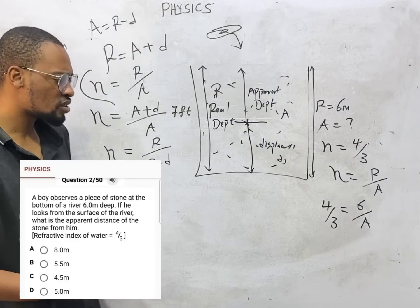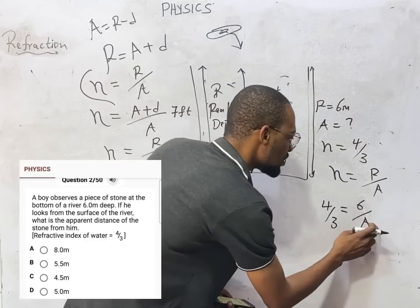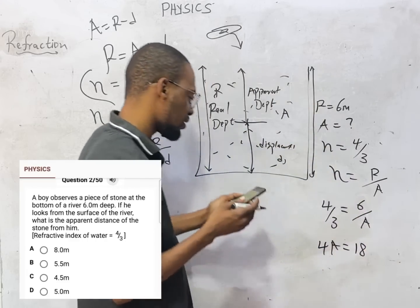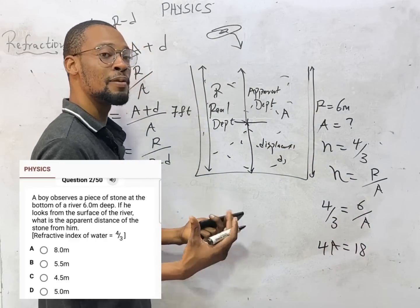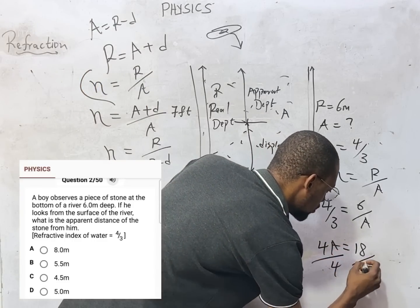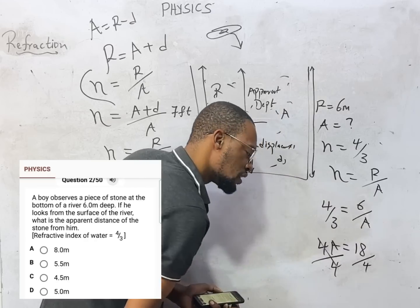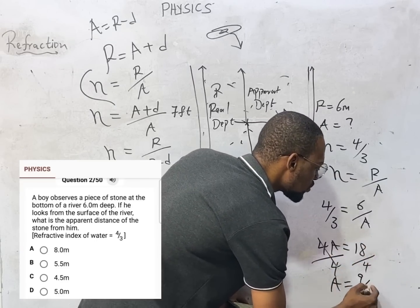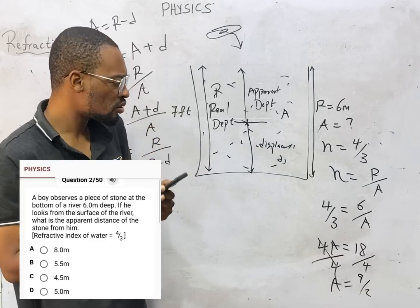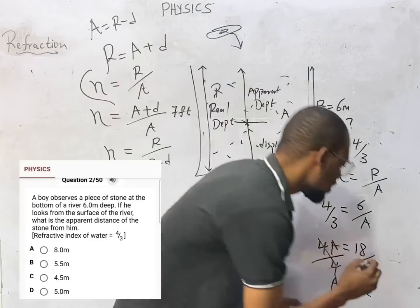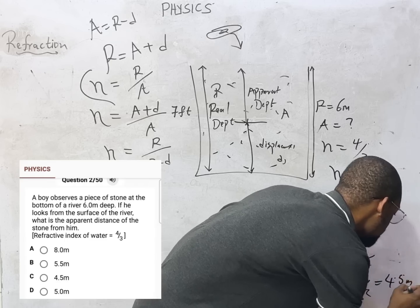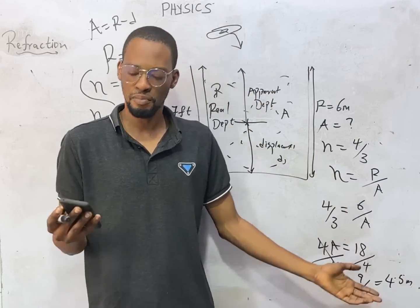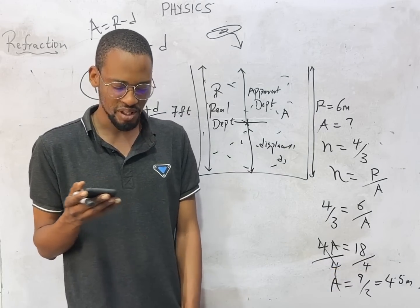To get A, we divide both sides by four. Four divided by four leaves A. So A equals 18 over 4, which simplifies to 9 over 2, and that is 4.5 meters. So the depth of the river is actually six meters, but from the boy's observation, the river appears to be 4.5 meters deep. Option C is the correct option.